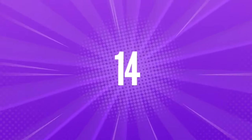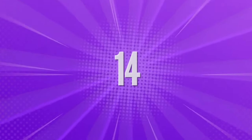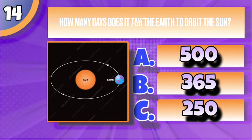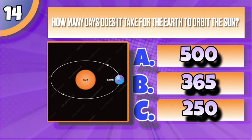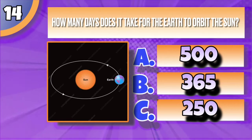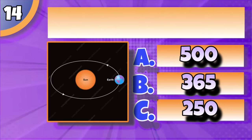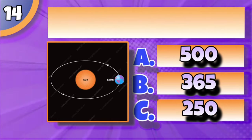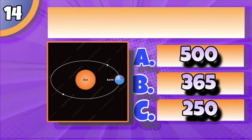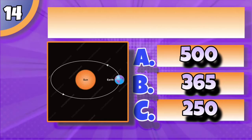Moving on to question number 14 of this general knowledge quiz. How many days does it take for the Earth to orbit the sun? Is it A 500, B 365 days, or C 250 days?